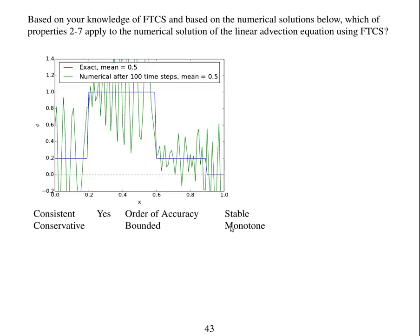Well, from analyzing the individual terms of forward in time, centered in space, we know that it's consistent because the approximation for the time derivative is first order accurate and the approximation for the spatial derivative is second order accurate. So yes, it's consistent. Order of accuracy: time was first order and space was second order, so overall it's first order accurate.